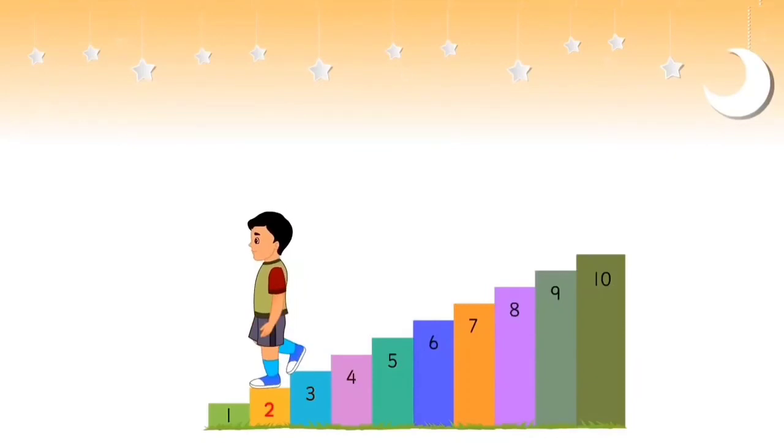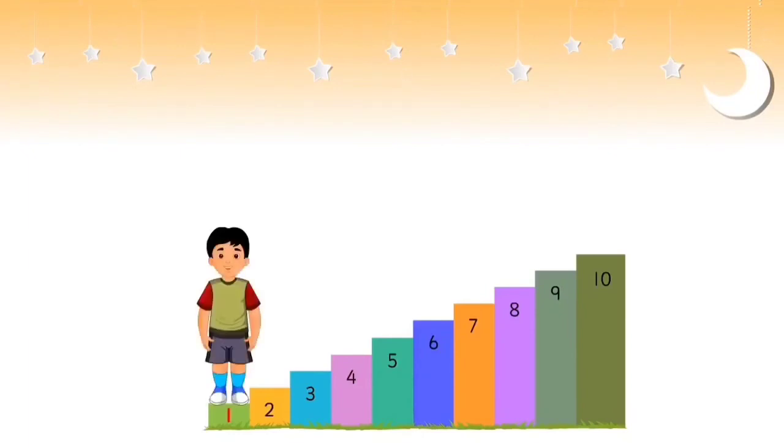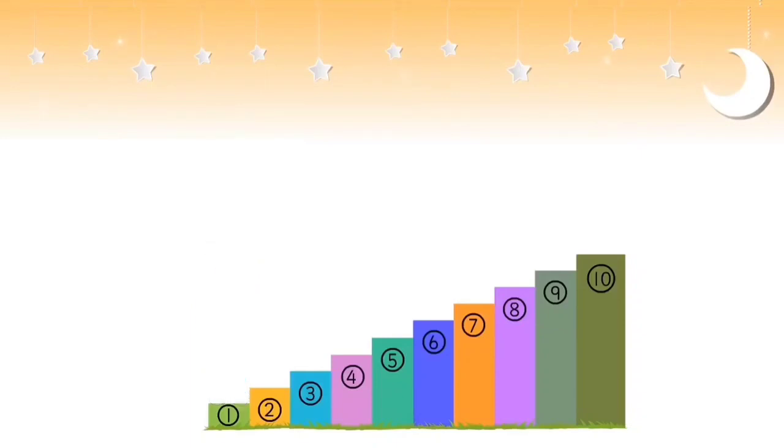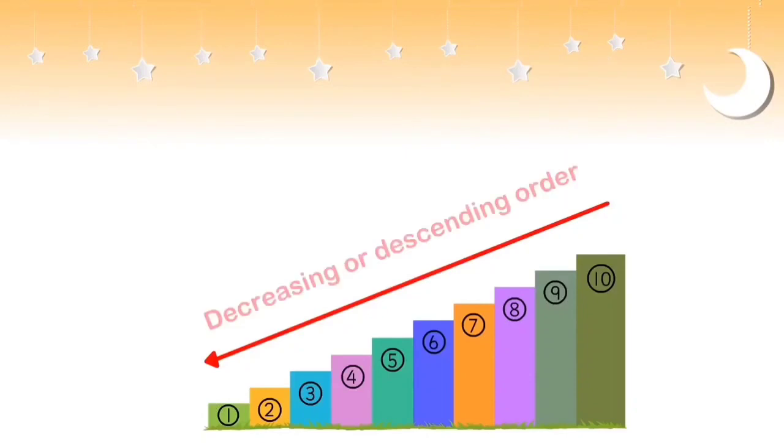And finally to step number 1. Did you observe that as he comes down each step, he is descending or moving to a smaller number than the previous number? Thus we can say that when numbers are arranged from the greatest to the smallest, they are in the decreasing or descending order.